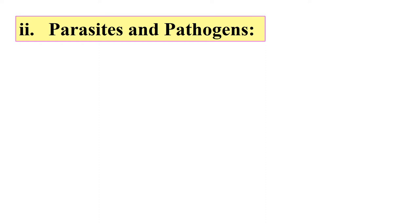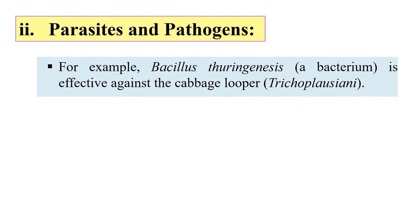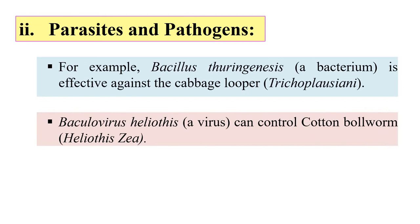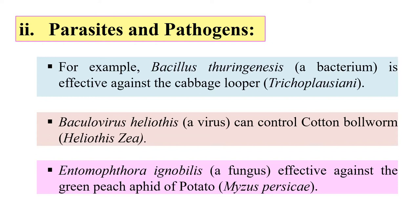These parasites and pathogens may include viruses, bacteria, and fungi. For example, Bacillus thuringiensis, a bacterium, is highly effective against the cabbage looper Trichoplusia ni. Similarly, Baculovirus heliothis, a virus, can be used to control the cotton bollworm Heliothis. And Entomophthora ignobilis, a fungus, is highly effective against the green peach aphid of potato, Myzus persicae.